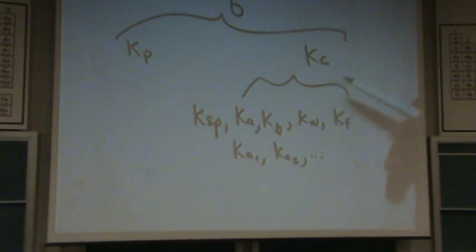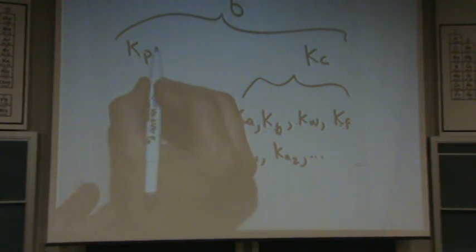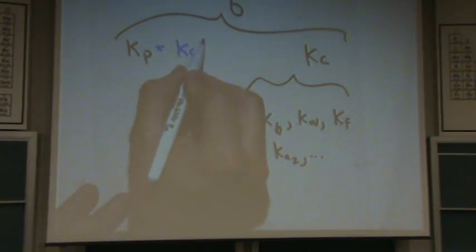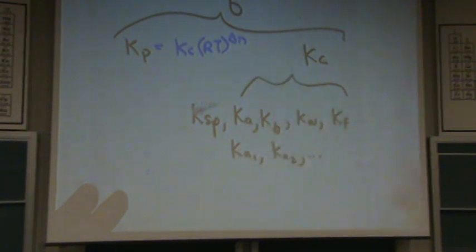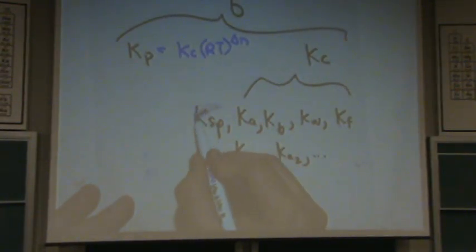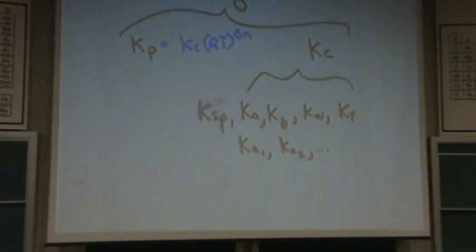Okay. All those Ks are KCs, meaning they have to do with concentrations. These two are related, and if I have a good memory, I will attempt to remember what the relation is. I believe it's KC. It should be given on your test. KC times RT to the delta N power. So you can relate those. KP just means you're given in pressure. So if you have pressures given, I just go ahead and use KP right away.